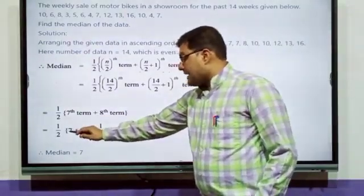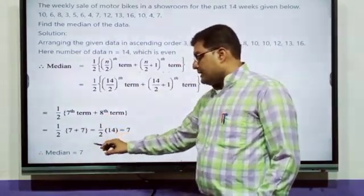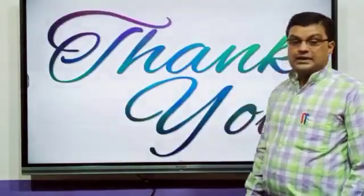So, 1/2(7 + 7). 7 plus 7. When you add 7 plus 7, that is 14. 14 divided by 2, that is 7. So, the median is 7. Thank you, everyone. Amen.